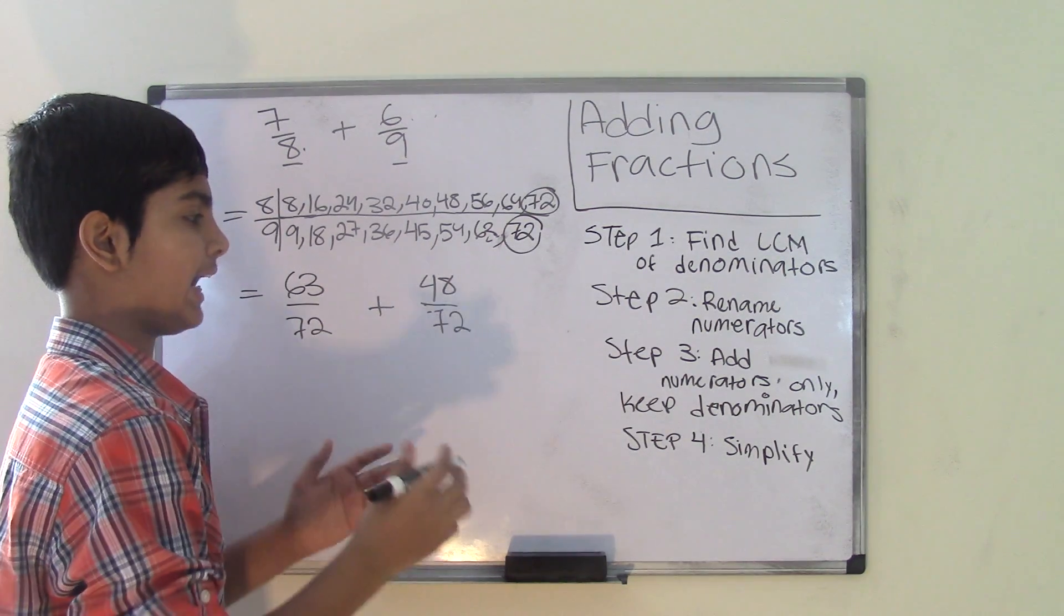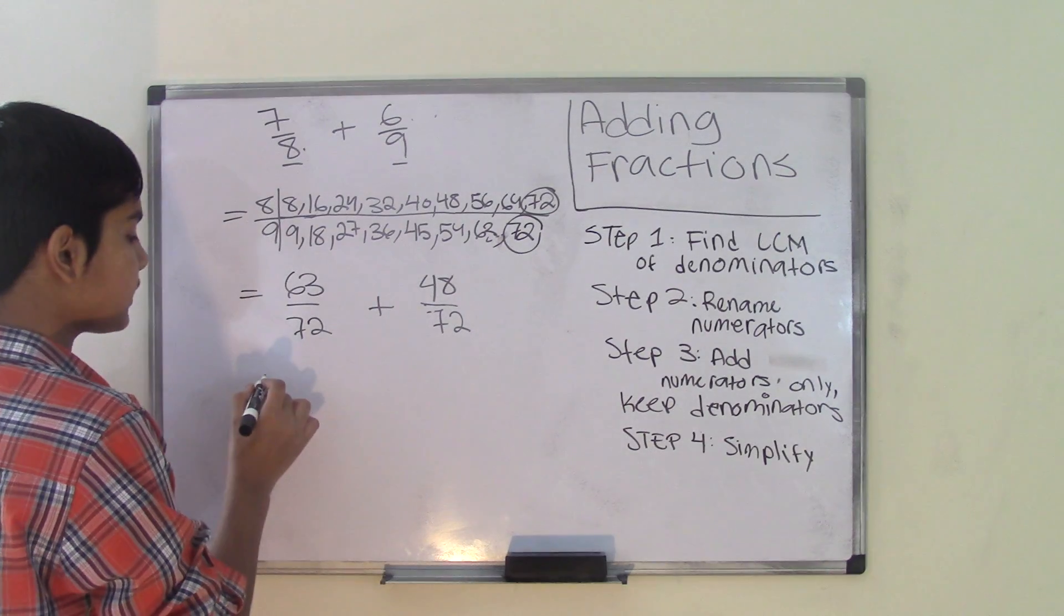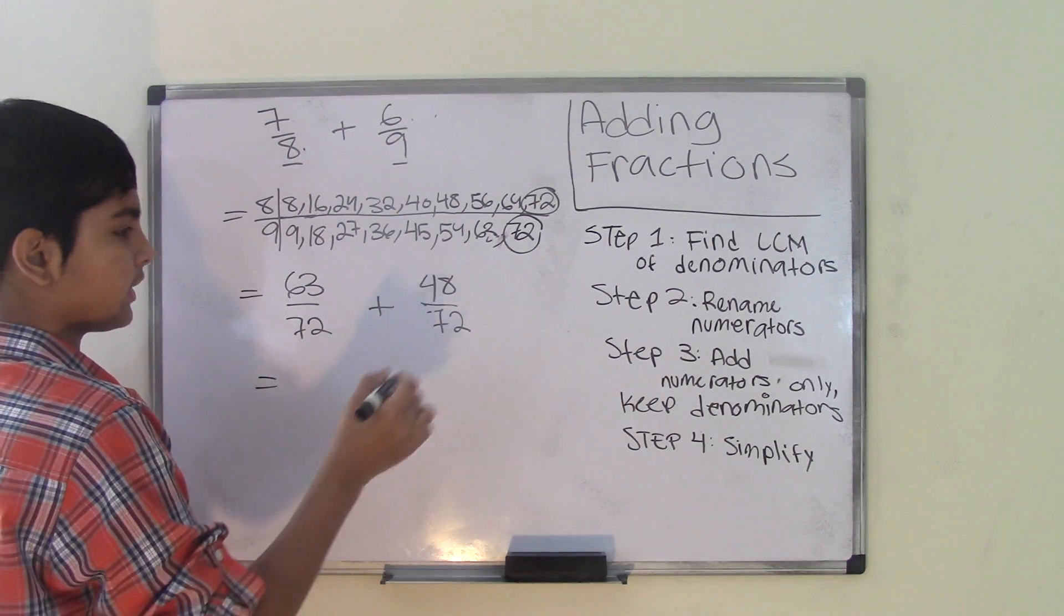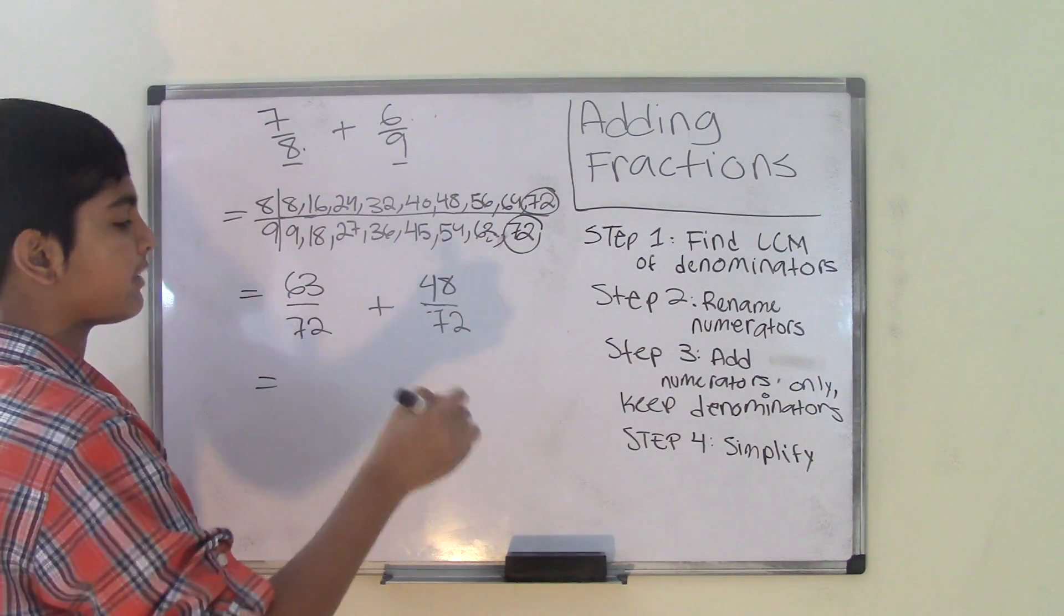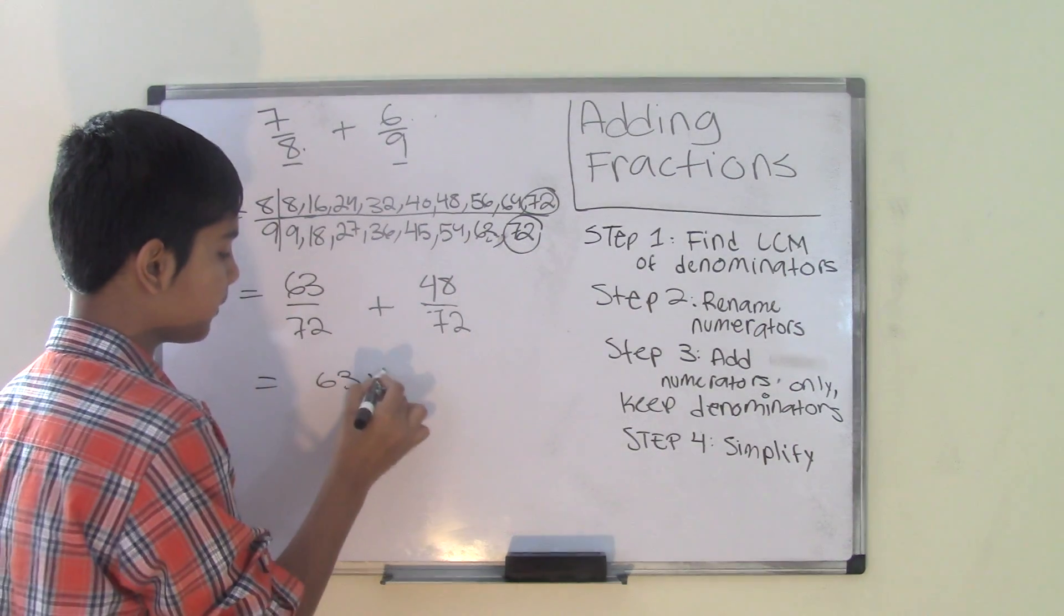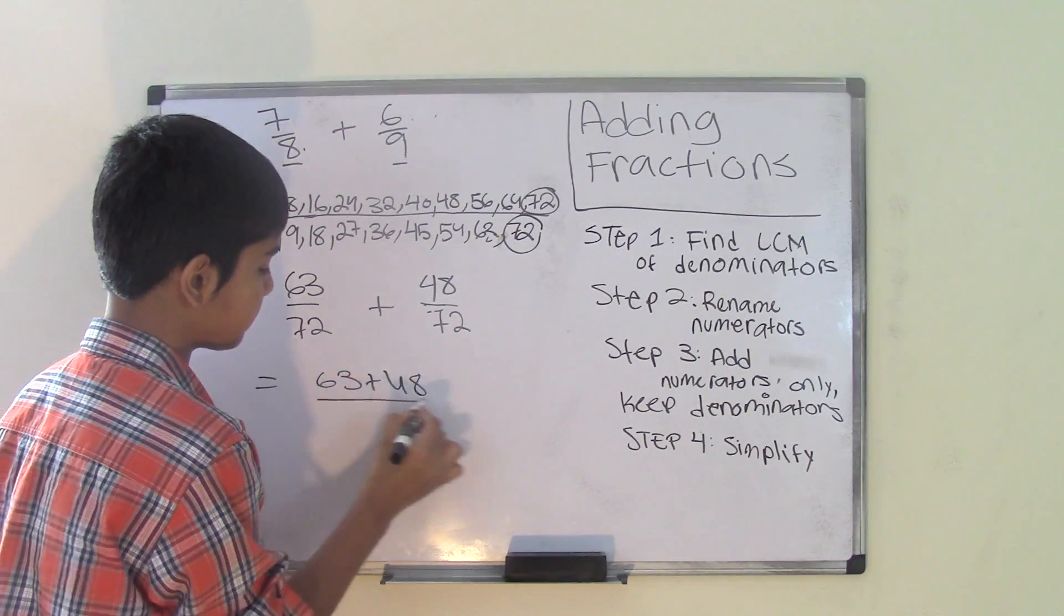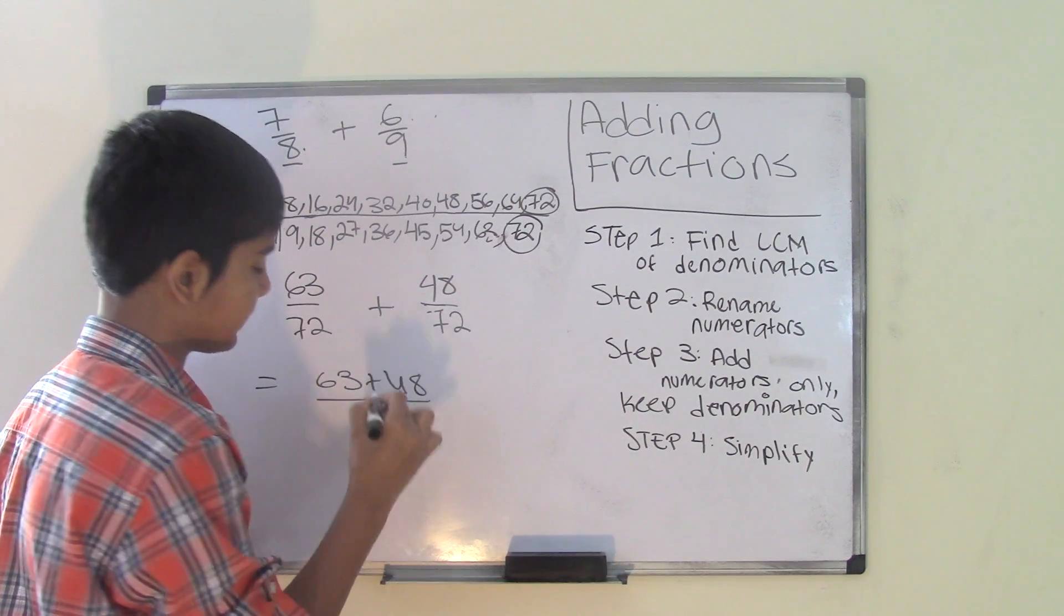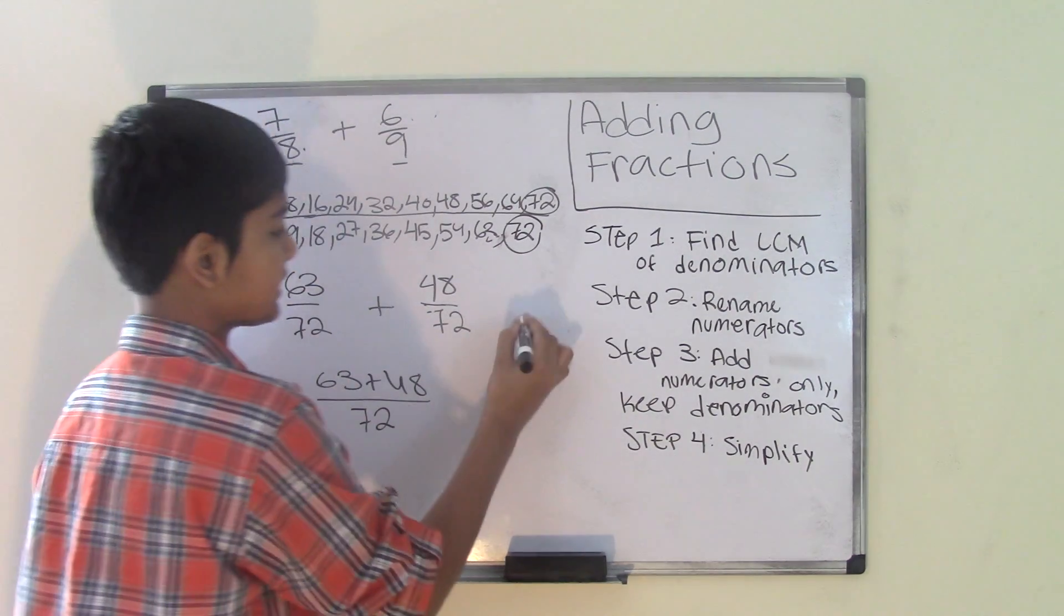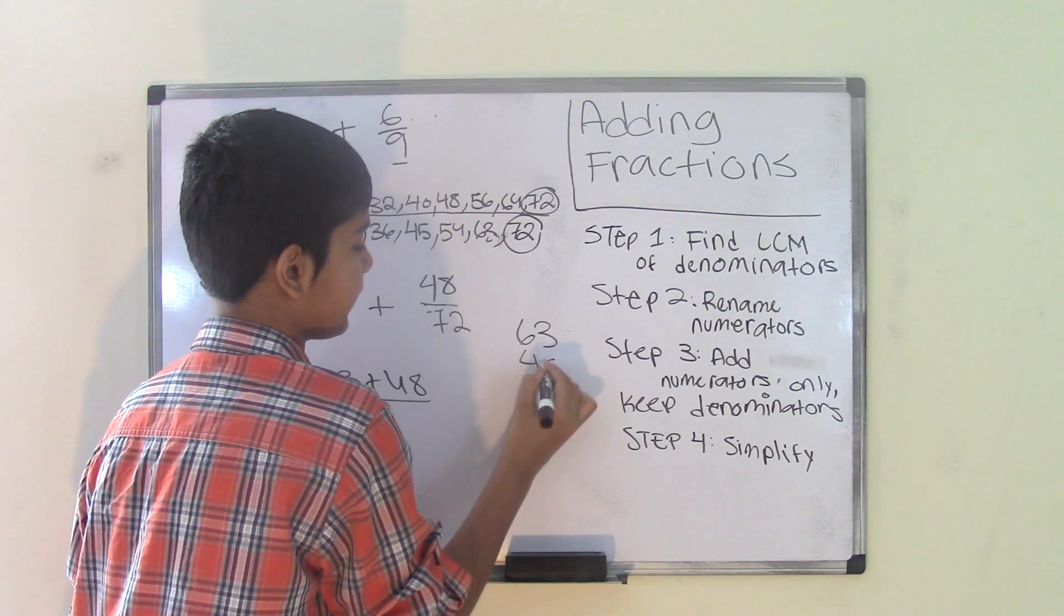step number 3 is to add numerators only. I'm going to keep the denominators as they are. Add numerators only and keep denominators. So 63 plus 48, and 72 will remain the same. What I need to do is add 63 with 48.